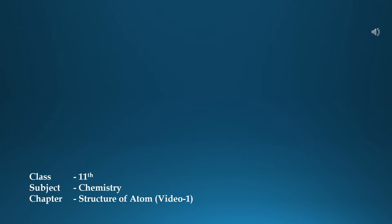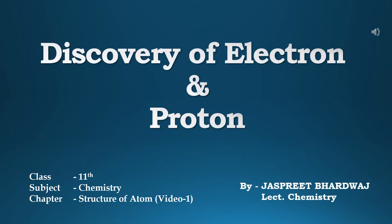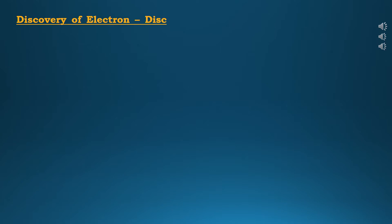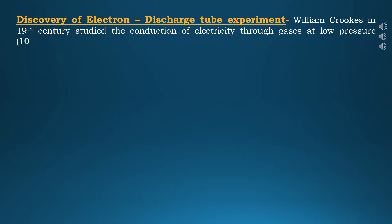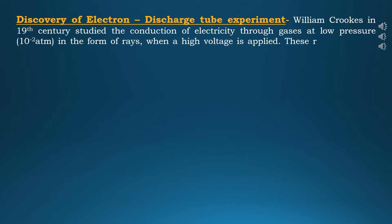Hello students, today we will discuss a topic from Plus One Chemistry, Chapter: Structure of Atom. The topic is discovery of electron and proton. First, let's discuss the discovery of electron with the discharge tube experiment. William Crookes in the 19th century studied the conduction of electricity through gases at low pressure — 10⁻² atmosphere — in the form of rays when a high voltage is applied. These rays are called cathode rays.